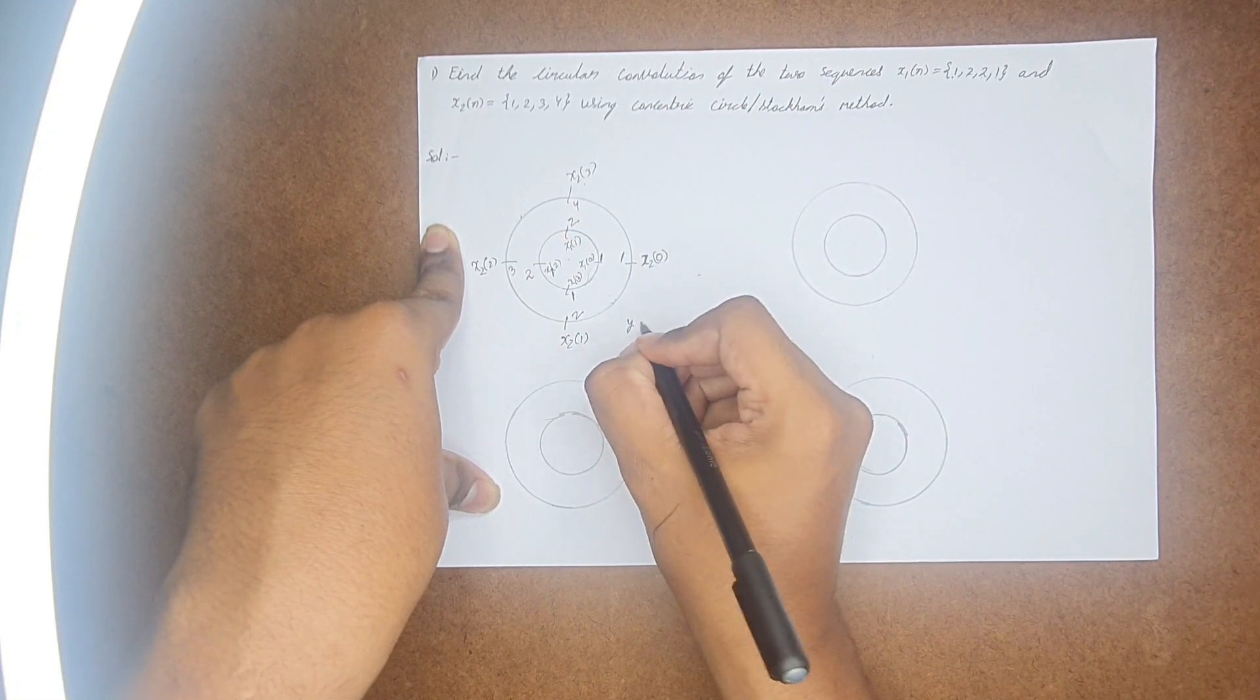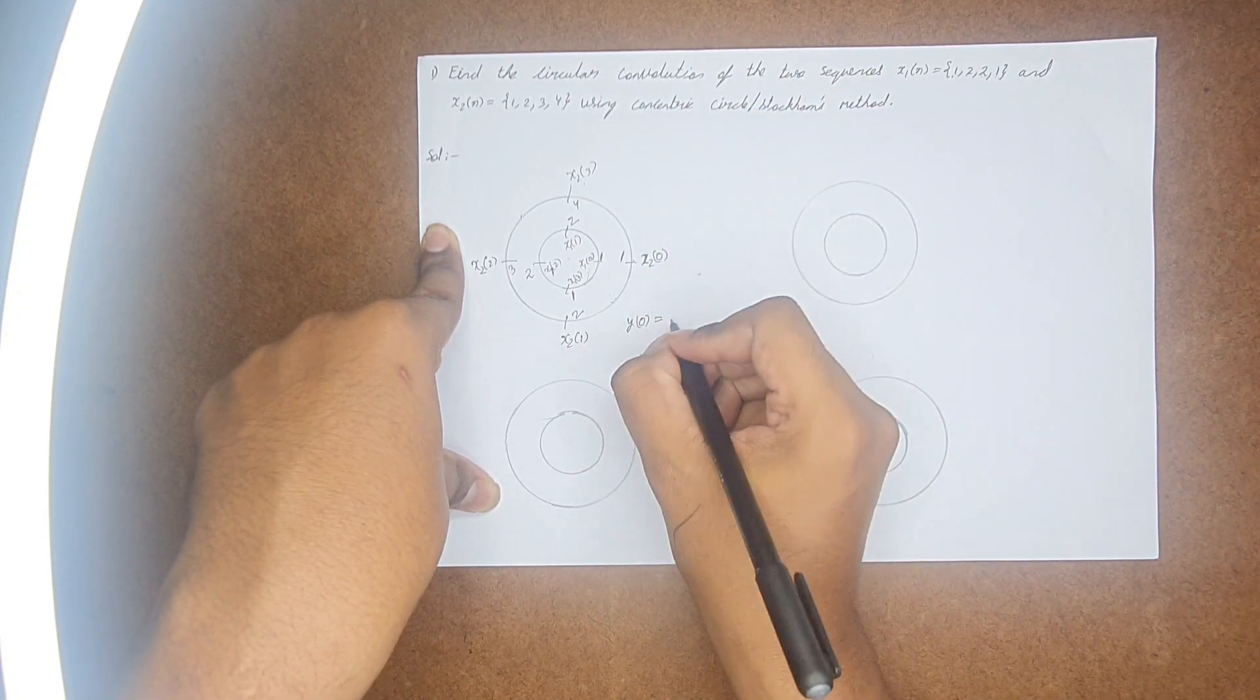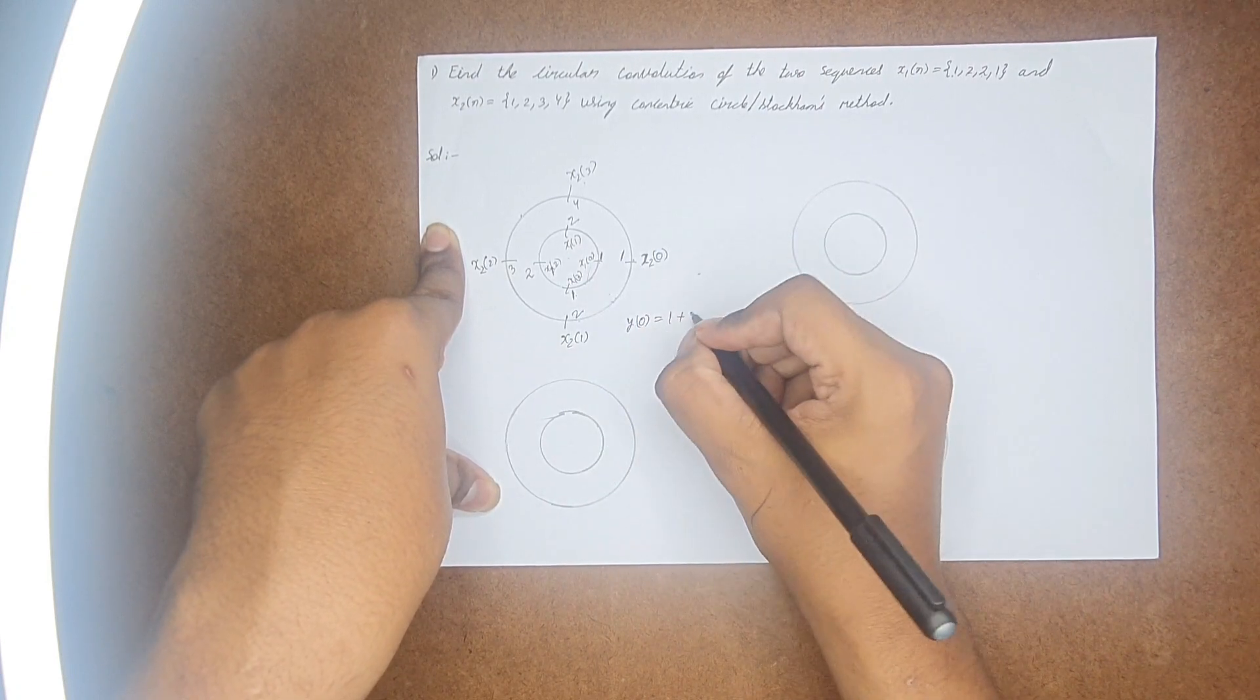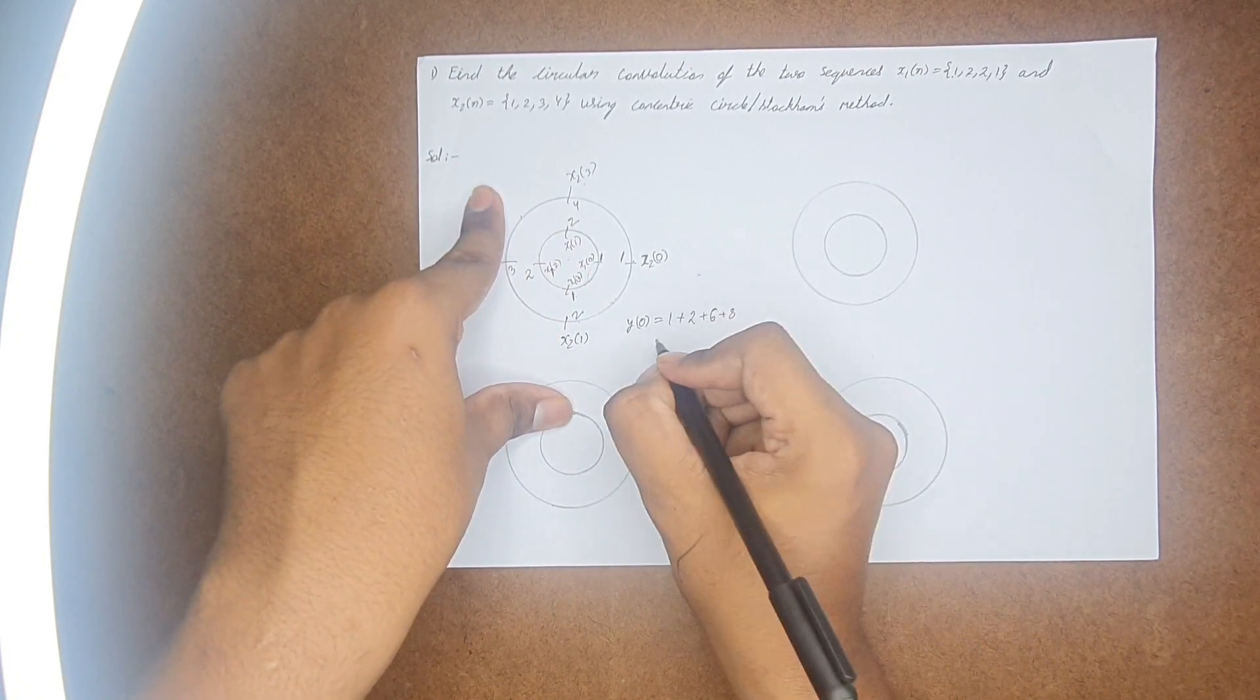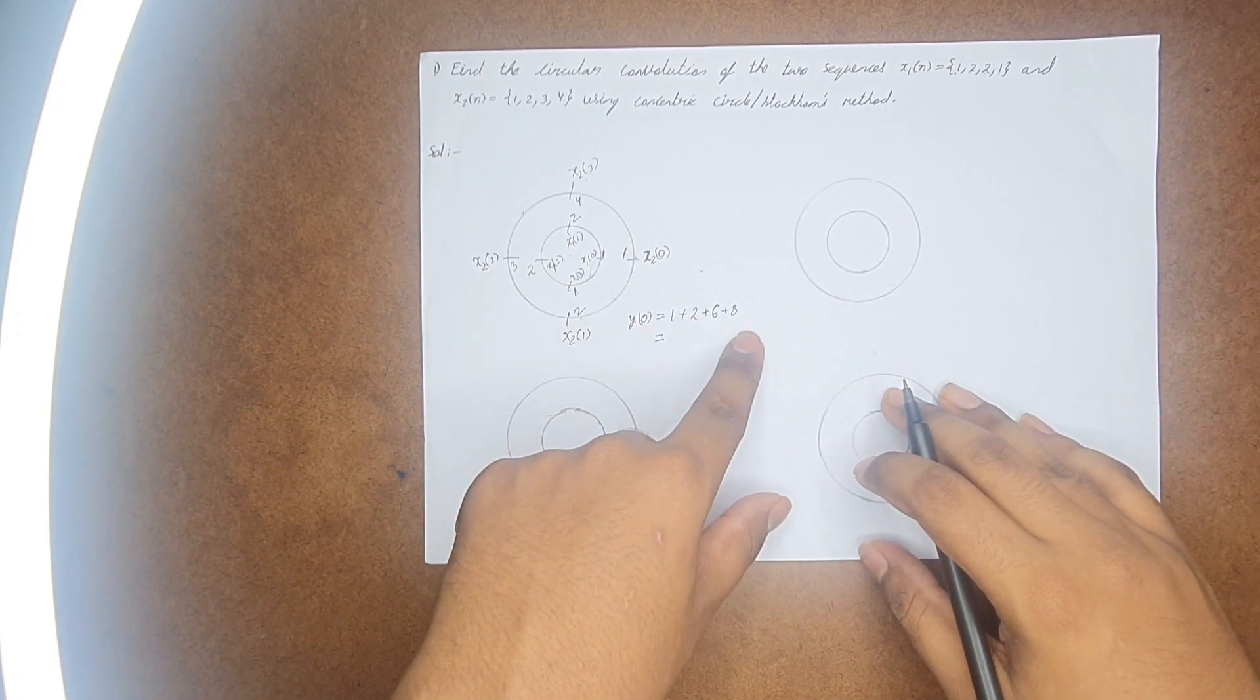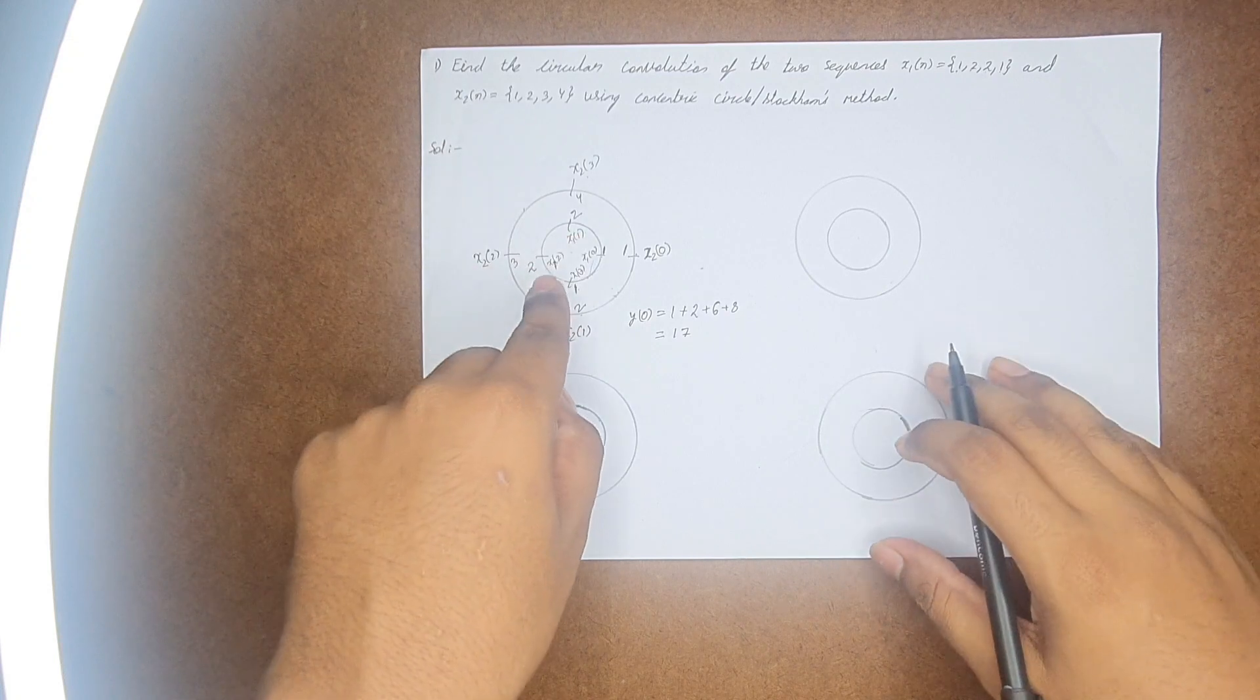Now to find y(0), it is nothing but just multiplying. So you need to have 1 into 1, plus 1 into 2, plus 3 into 2 which is 6, plus 4 into 2 which is 8. So total you will get y(0) as 9 plus 8, which is 17.